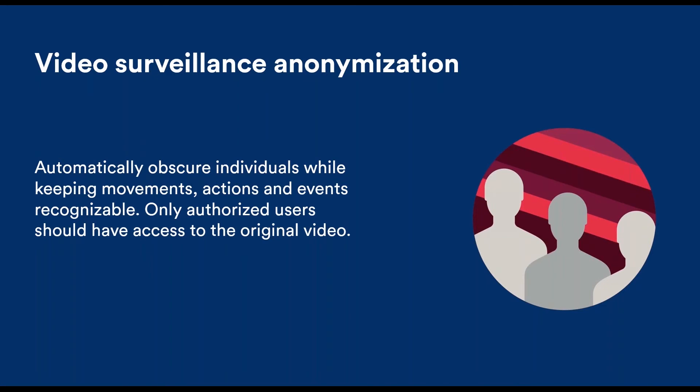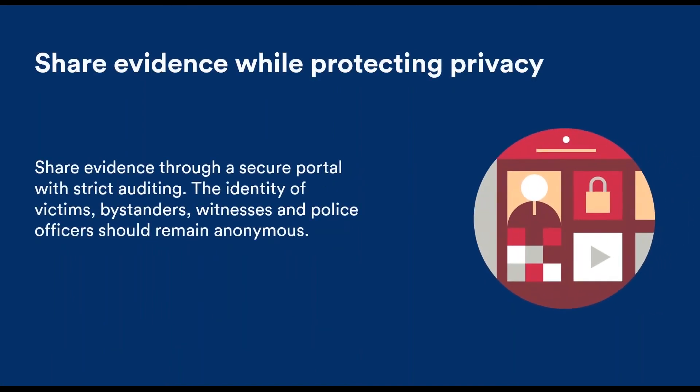Another very important method is dynamic video anonymization — blurring, masking, or pixelization — to maintain the privacy of people on cameras so operators only see what they need to see. This applies to live and recorded video, indoors and outdoors, and is fully customizable with our privacy protection module.